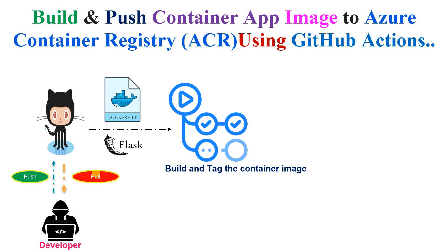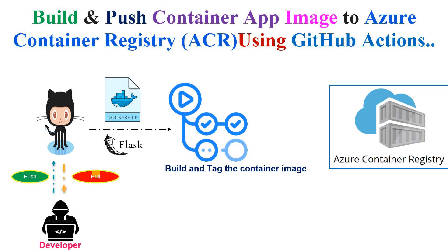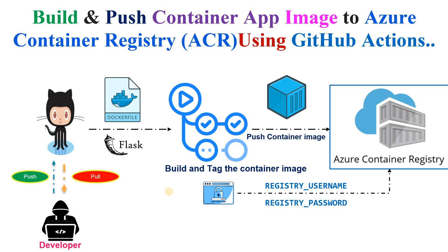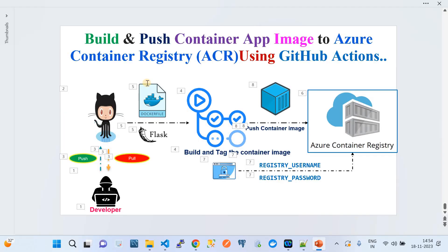The definition of the container image will be created in the Dockerfile. The aim is to push that image to the container registry. To authenticate with the container registry created on Azure, we're going to use the registry username and password. We'll see how GitHub Actions builds, tags, and pushes the container image into the registry. This is going to be a quick demo using the Dockerfile and GitHub Actions to build the image dynamically and push it to Azure Container Registry.